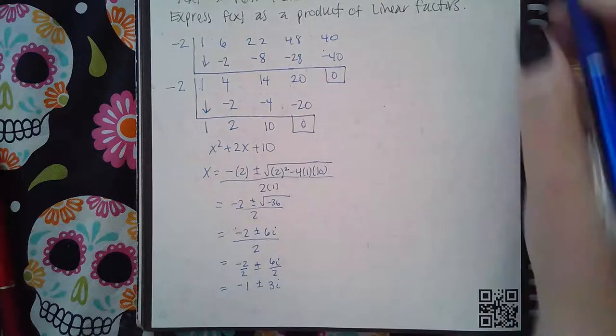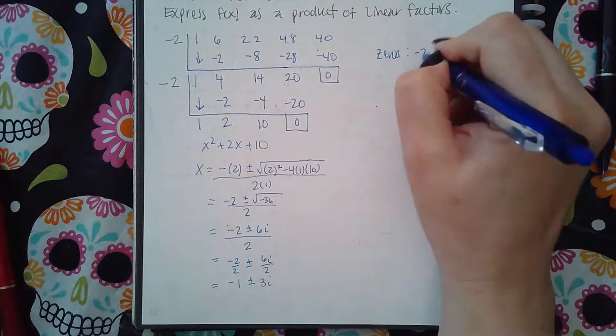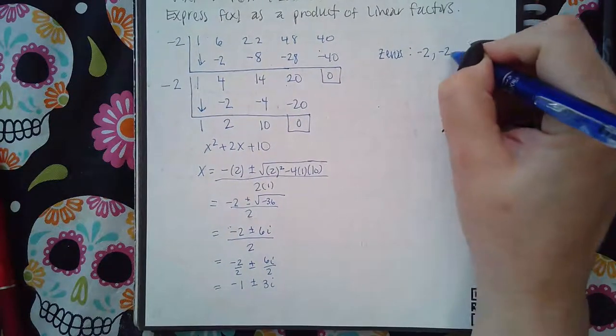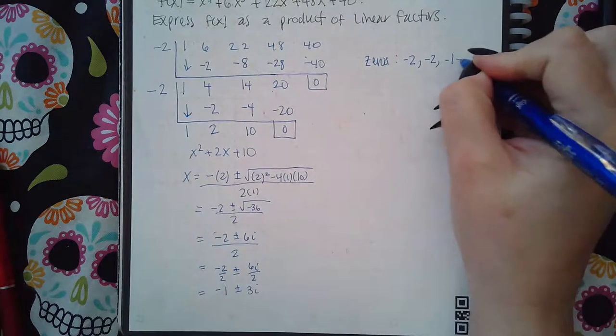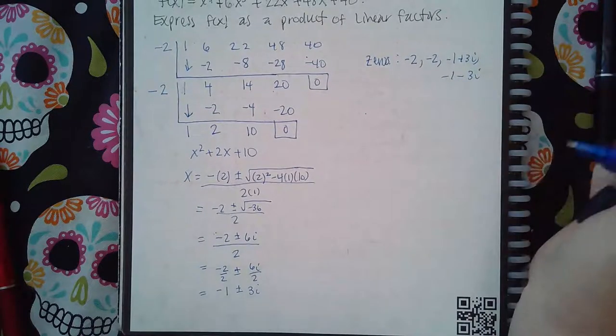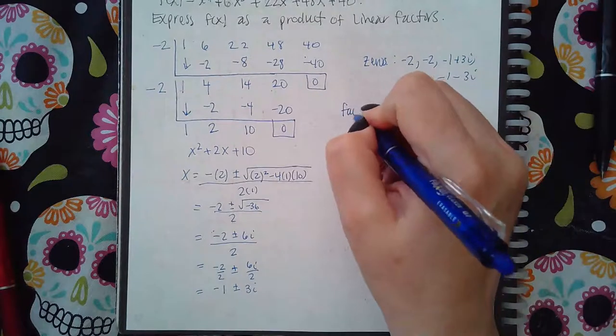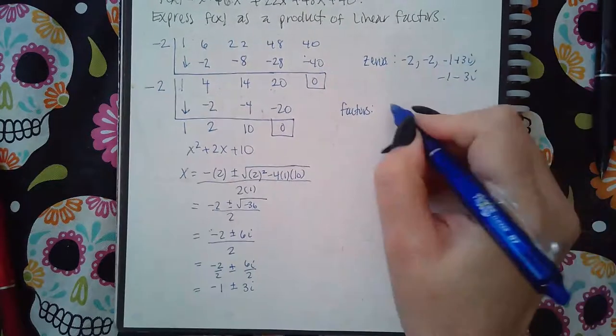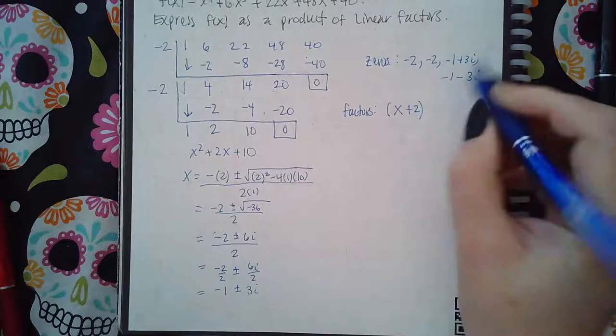So what are the zeros? The zeros are negative 2 twice, because the multiplicity is 2, and then I have negative 1 plus 3i and negative 1 minus 3i. But that's not what it asked me for. It asked me for the factors. And the factors are going to be x and then the opposite signs of each zero.